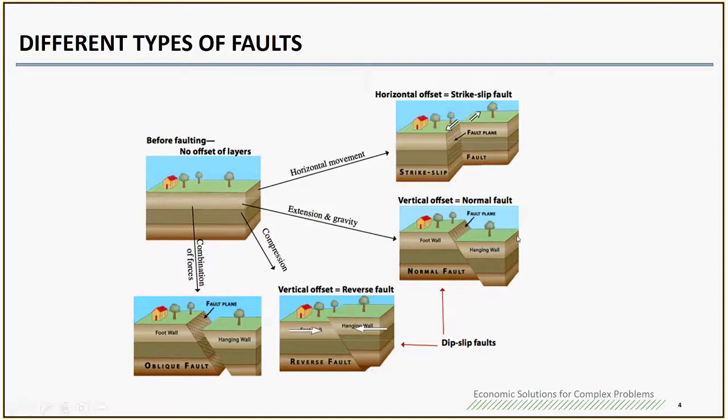For the normal fault, they move in a vertical direction. The hanging wall will go down, the footwall at base will stay there. You need to understand the footwall or hanging wall because those terms will be used for seismic hazard analysis if you need to do ground motion analysis.